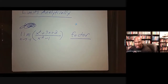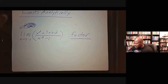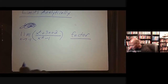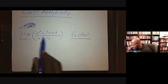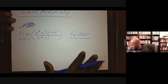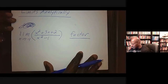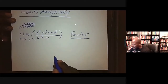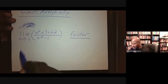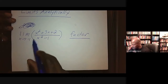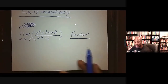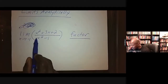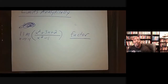You need to be very proficient at factoring — a factoring expert — not just for this, but for a lot of things in higher levels of mathematics. Now, the first thing I try to do when finding limits analytically is plug the number in for x. We call that direct substitution. If I can plug this number in for x and get an answer back, that number is going to be the limit.